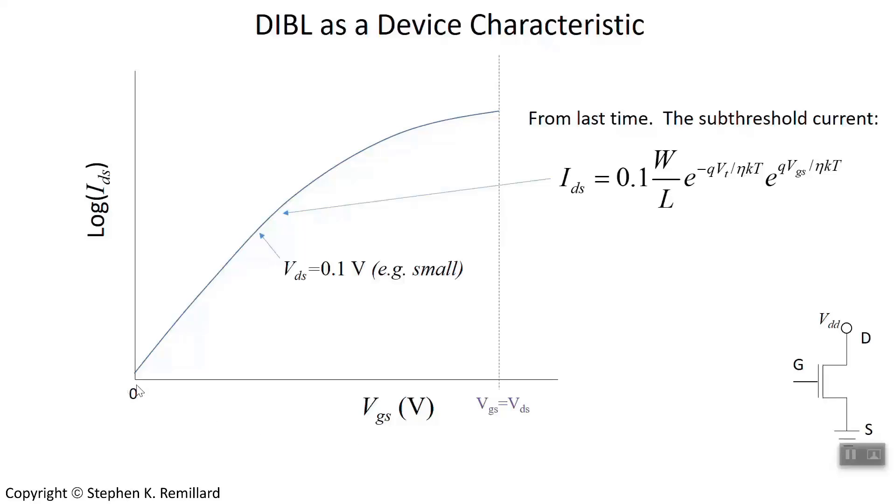A few things about this graph: the gate source voltage is going from zero to the drain source voltage, whatever it is. Why is that? If you looked at an nFET, the source, say, is at ground. The drain is usually hooked up to the power supply, V sub DD is the power supply voltage. That's the highest voltage in the system. If ground is the lowest voltage, the gate can only go between ground and the power supply voltage. There's a for instance in this graph, where the drain source voltage is small, say 0.1 volt. That's small. Power supplies are usually a volt or two.